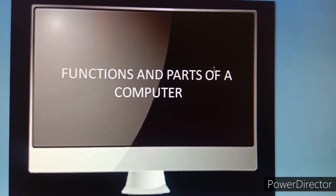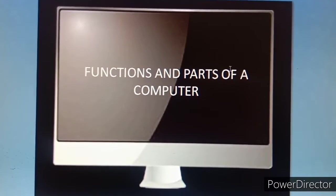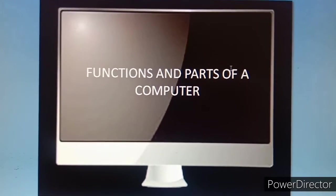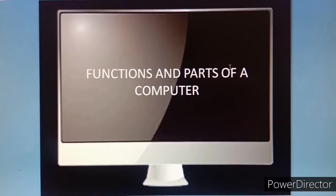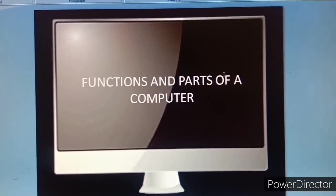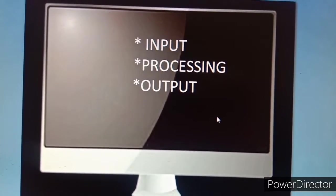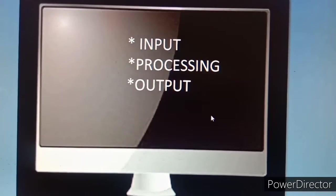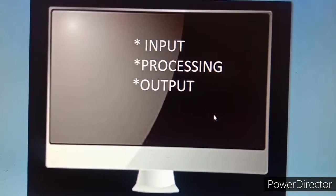Functions and parts of a computer. Already we know A computer is an electronic machine Which is made up of several parts. So Functions of a computer, The main functions of a computer are Input, processing and output. Now let us understand What these terms mean.